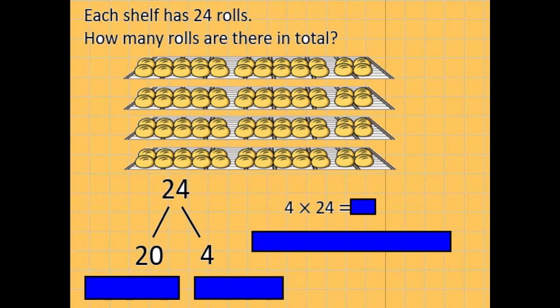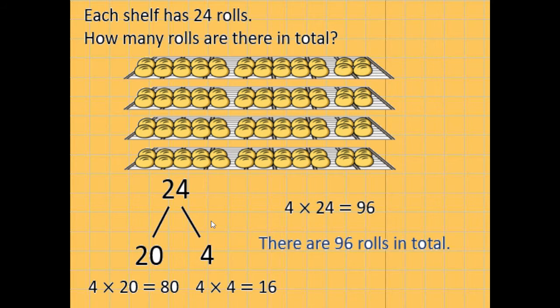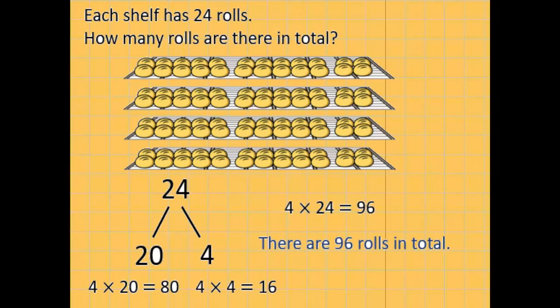We're back with the rolls again. So each shelf has 24 rolls. How many rolls are there in total? If you want to pause and do it as column multiplication, you can. We're going to go through partitioning it to start with. So there are 1, 2, 3, 4 rows of shelves. So 24 on each. So our question is 4 times 24. So I'm going to partition it, 20 and 4. So 4 times 20 I know is 80. 4 times 4 I know is 16. And then I can add those two totals together, which gives me a total of 96 rolls.